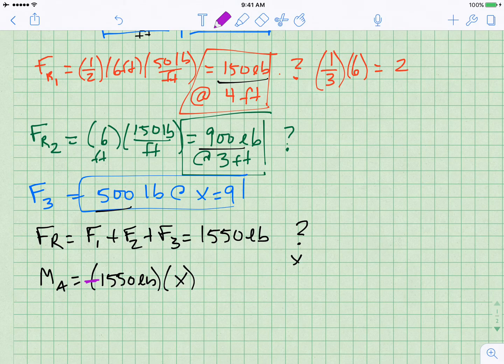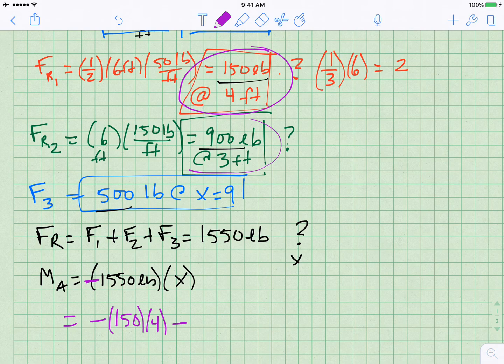And after we can figure out what it is, we'll be able to solve for x. Well, these three forces are also causing that equivalent moment. And so what I am saying is that FR times x, this value right here, so minus 150 times 4 minus the second one, 900 times 3. So these are forces times distance minus this third one, which is 500 times 9. This all will equal that.